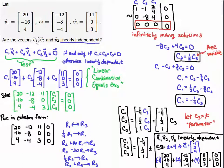So are the vectors v1, v2, and v3 linearly independent? No, they're not. I found a way to write one vector in terms of the other two vectors. Okay, good luck.